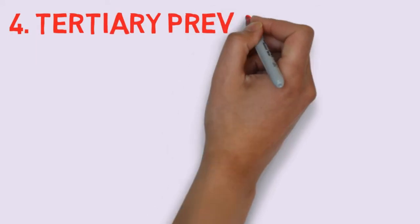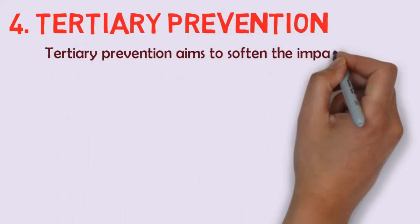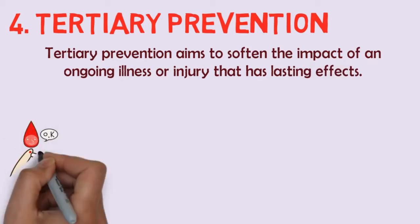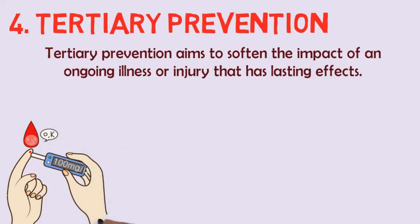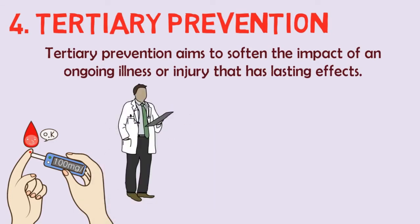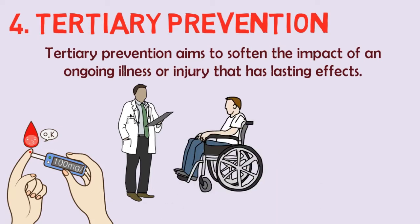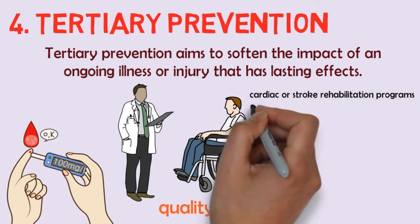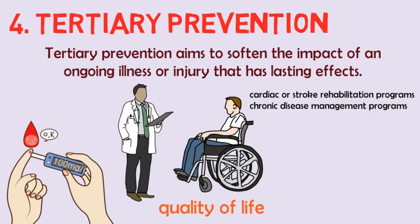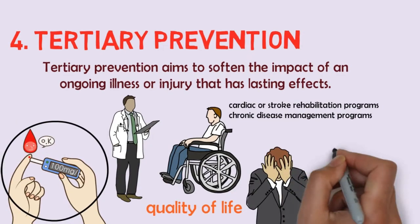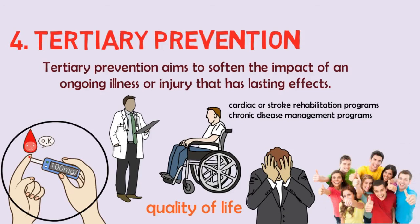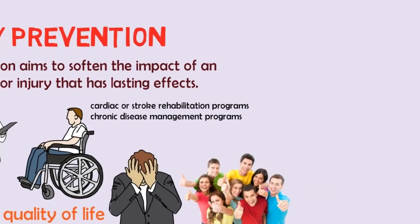Fourthly, we have tertiary prevention. Tertiary prevention aims to soften the impact of an ongoing illness or injury that has lasting effects. This is done by helping people manage long-term, often complex health problems and injury, such as chronic diseases and permanent impairment, in order to improve as much as possible their ability to function, their quality of life, and their life expectancy. Examples include cardiac or stroke rehabilitation programs, chronic disease management treatment programs such as for diabetes, arthritis, and depression, and vocational rehabilitation programs to retrain workers for new jobs when they have recovered as much as possible.